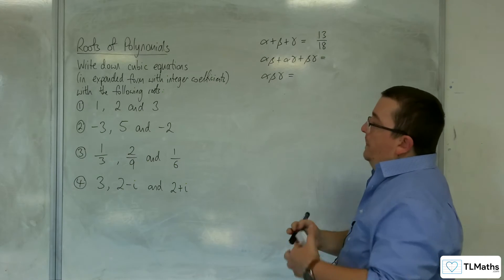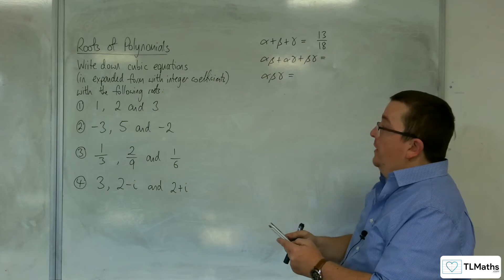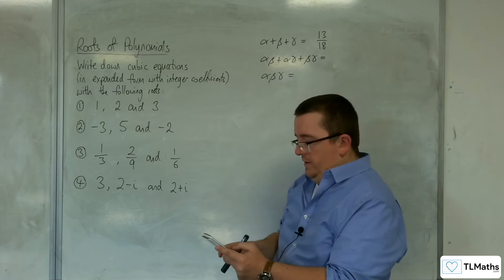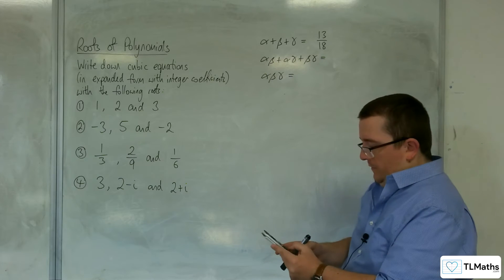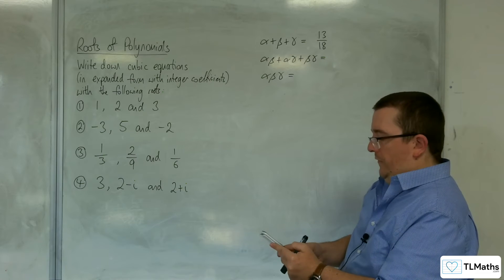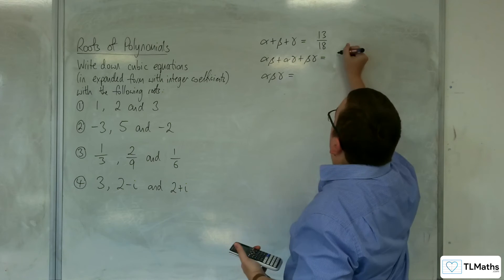Then we've got the sum of the product pairs, so we've got 1/3 times by 2/9, plus 1/3 times 1/6, plus 2/9 times 1/6, and we get 1/6 from that.